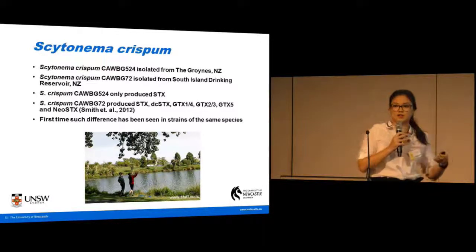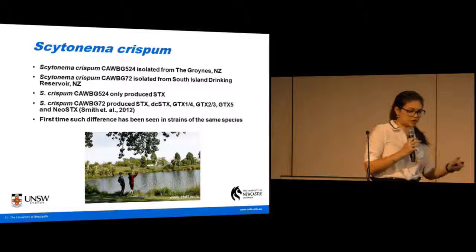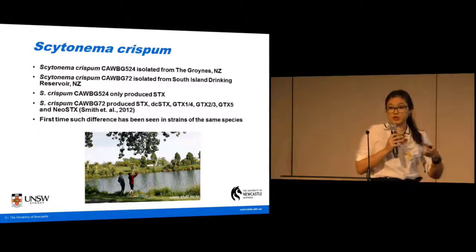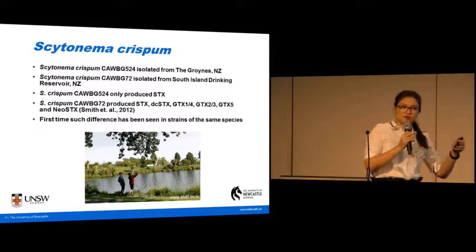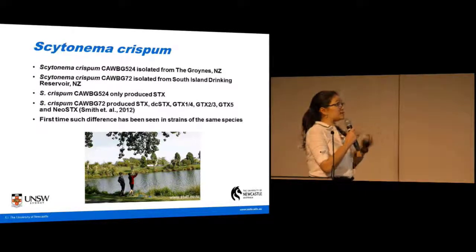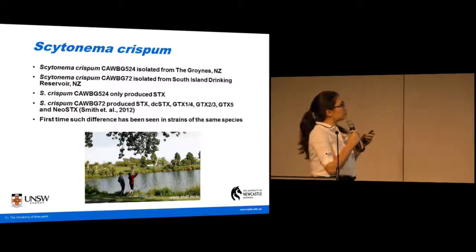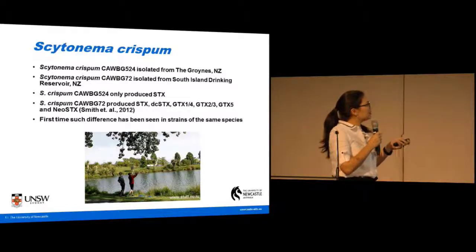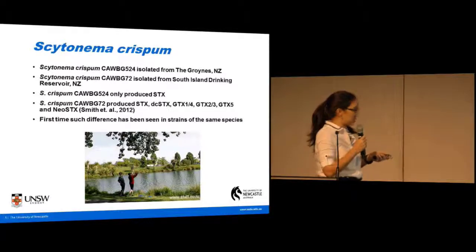This is really the first time this kind of difference has been seen. Normally in cyanobacteria, such as Aphanizomenon or Anabaena, strains of the same species will produce the same toxins or incredibly similar toxin profiles, just at varying levels. Whereas here, we're seeing completely different paralytic shellfish toxins being made. So we thought this was a great candidate situation to study how these paralytic shellfish toxins are being made.